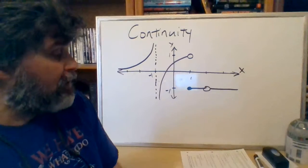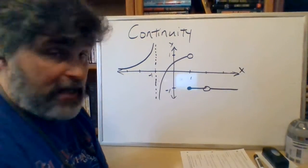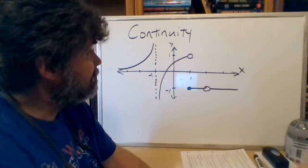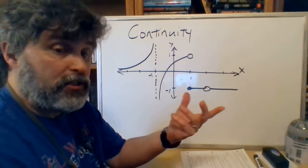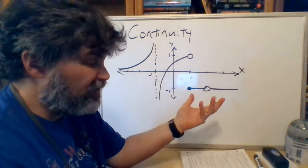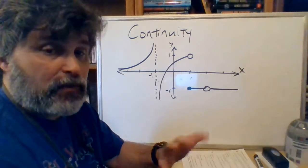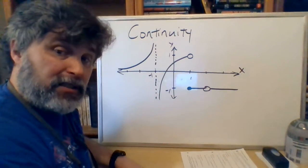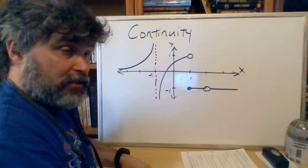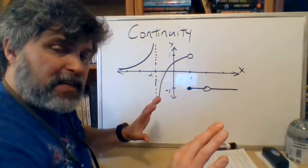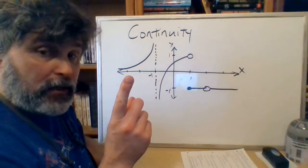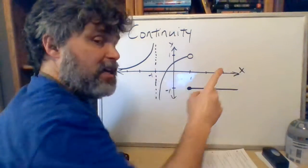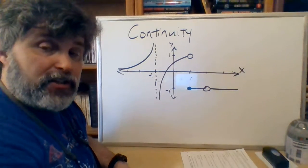I have a graph on the board. It's an odd graph — finding the equation of that would be a piecewise function for sure. It has three things I'm going to use as examples of the discontinuities we're going to talk about. The very basic idea of continuity is: if I can take my little finger, start way out on the left of the function, and trace along the function without ever picking my finger up, then the function is continuous.